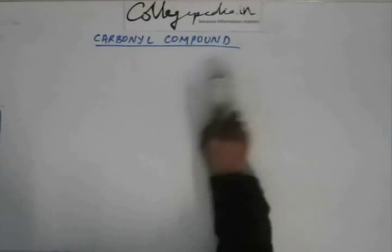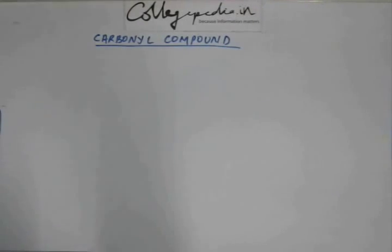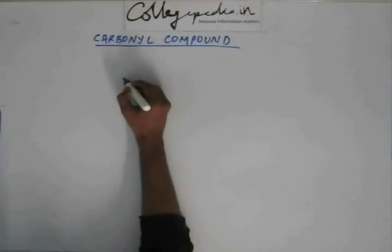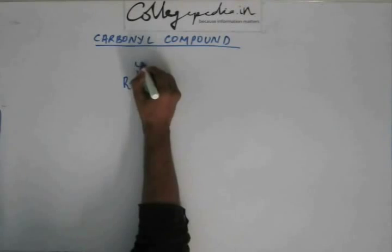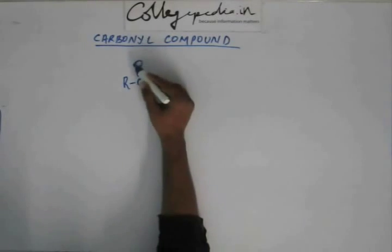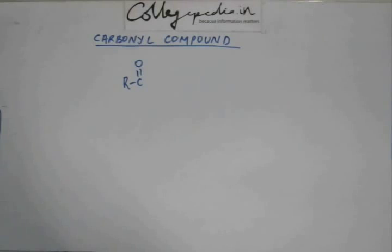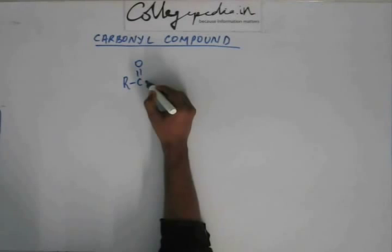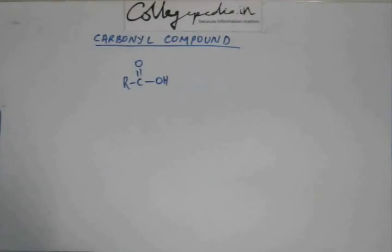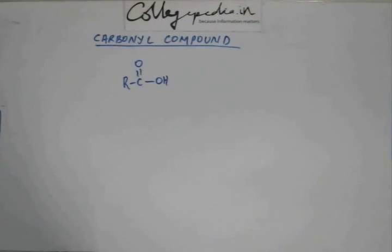Let's see what kind of compounds would be carbonyl compounds. For example, suppose I have a C double bond O carbonyl group — on one side I have an alkyl group R, which could be methyl, ethyl, propyl, butyl, or anything — and on the other side I have a hydroxyl group OH. This compound seems to have C double bond O, so it seems to be a carbonyl compound.